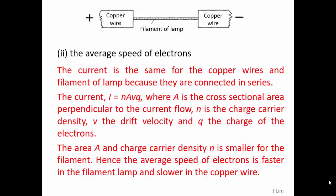The current is the same for the copper wires and filament of lamp because they are connected in series. The current I = nAvq where A is the cross-sectional area perpendicular to the current flow, n is the charge carrier density, v is the drift velocity, and q is the charge of the electrons.